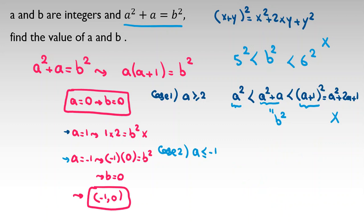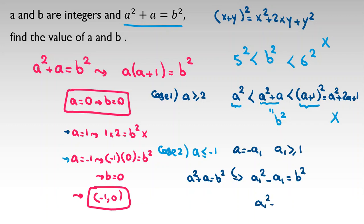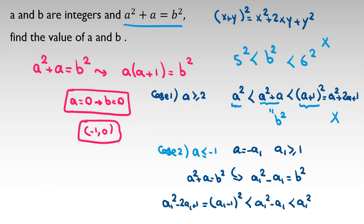For a clearer explanation, let a equal negative a1, where a1 is at least one. Then a squared plus a equals b squared becomes a1 squared minus a1 equals b squared. We use the identity (x minus y) squared equals x squared minus two xy plus y squared to help establish the inequality.